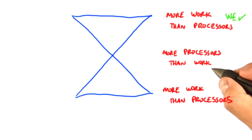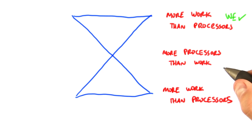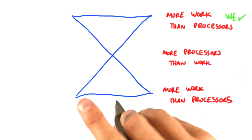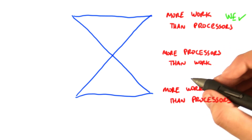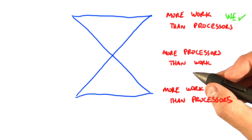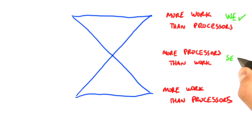Conversely, let's say you have more processors than work. In this case, you have plenty of processors, so you're limited instead by the number of steps in the algorithm. You'd be willing to do more work to get fewer steps — you've got more than enough processors to handle the extra work. So you'd pick the implementation that is more step efficient.